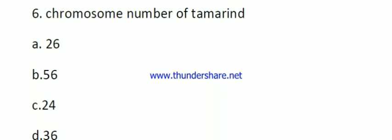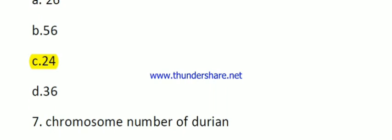Question number six: chromosome number of tamarind. The options are 26, 56, 24, and 36. The right answer is 24. Question number seven: chromosome number of durian. The options are 26, 56, 40, and 36. The right answer is 56.